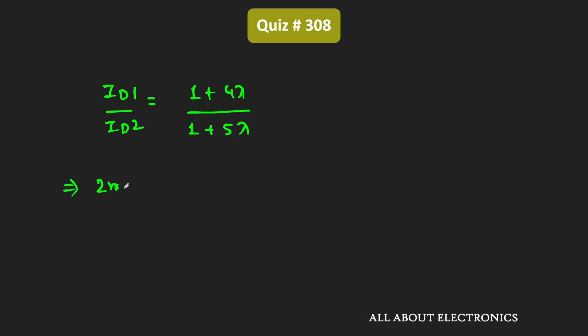That means 2 mA divided by 2.05 mA is equal to (1 + 4λ) divided by (1 + 5λ). Or if we further simplify it,